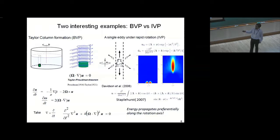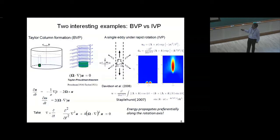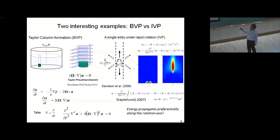Because the inertial waves are low frequency, you can say this is essentially the quasi-steady approximation. The more interesting problem for geophysical application is a localized disturbance with no boundary — an initial value problem. If you start with a Gaussian eddy at t=0, you can solve the equations and get analytical solutions. At later times, the energy propagates preferentially along the rotation axis, forming a column-like structure. But this comes from a fluid disturbance, not a solid body, so it is similar in some ways and very different in others.